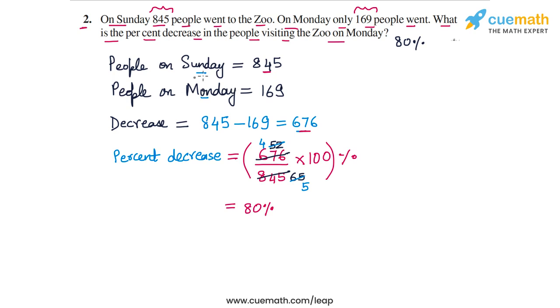And how did we find it? We took the people on Sunday, 845. The people on Monday was 169. So we calculated the decrease, 676. And then we converted it into percentage taking the base as the original number, 845.